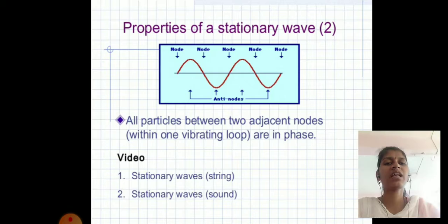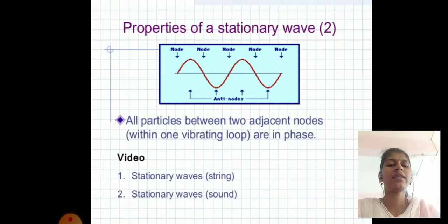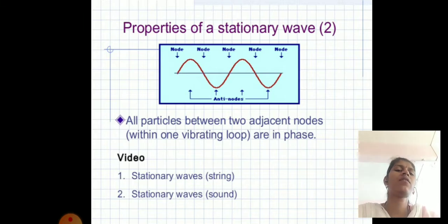An easy-to-understand example of stationary waves: two people hold either end of a jump rope and shake it. This is a stationary wave example.